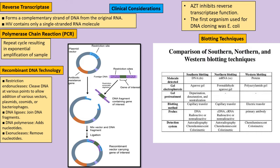Recombinant DNA technology uses different types of enzymes to study DNA. The reverse transcriptase enzyme, found in HIV, performs reverse transcription — making DNA from mRNA. Restriction endonuclease enzymes cleave DNA at specific points, allowing insertion of vectors, plasmids, cosmids, or bacteriophages. DNA ligase joins DNA fragments, DNA polymerase adds nucleotides, and exonuclease enzymes are also used.